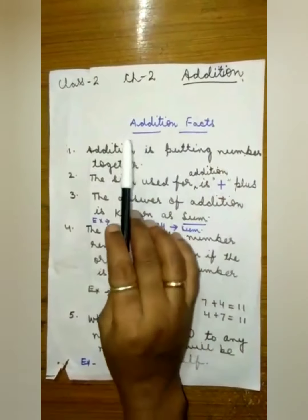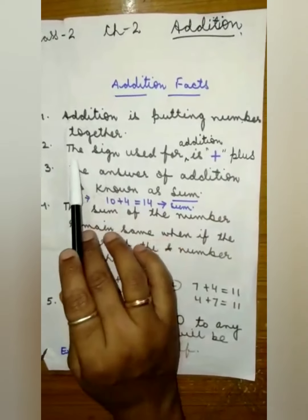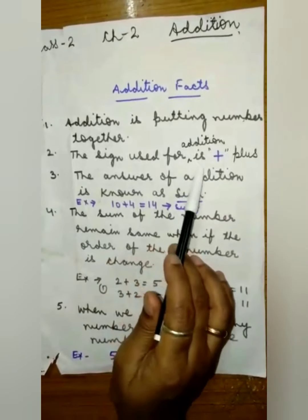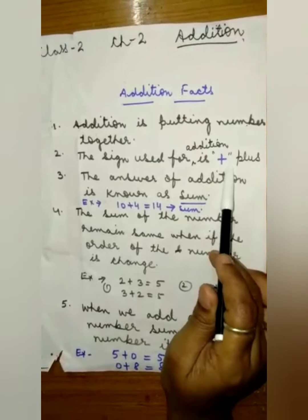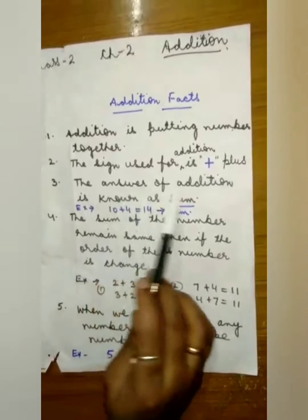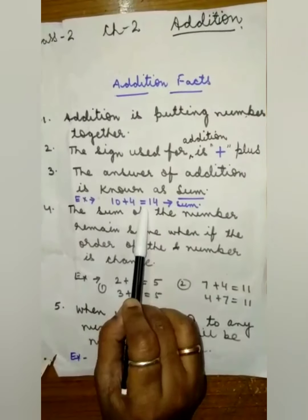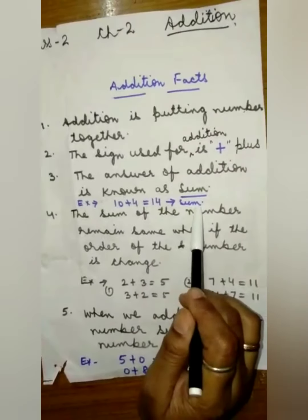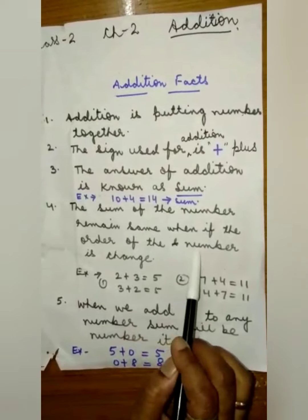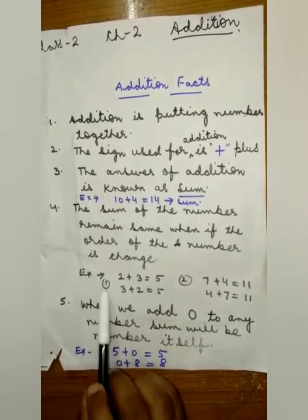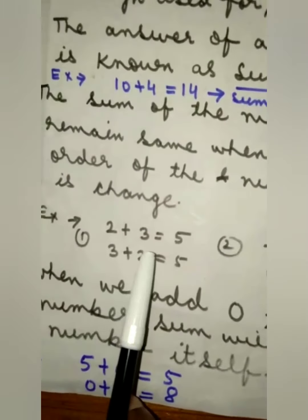Let us start Chapter 2 — Addition. First, we will see the addition facts. Addition is putting numbers together. Second, the sign used for addition is the plus sign. Third, the answer of addition is known as the sum — when we add two numbers, the result is known as the sum. Fourth, the sum of the numbers remains the same when the order of the numbers is changed.